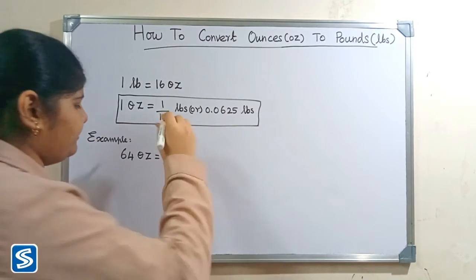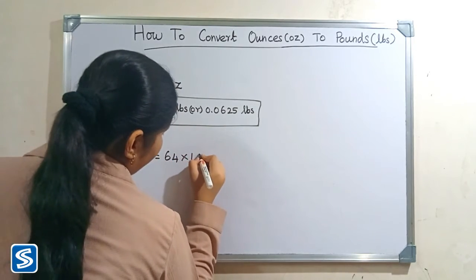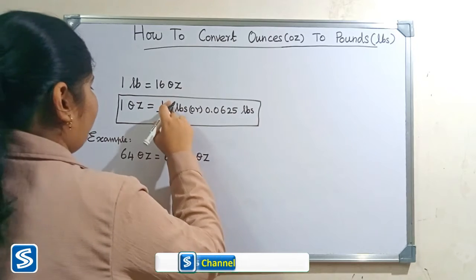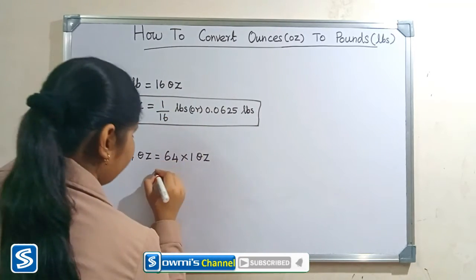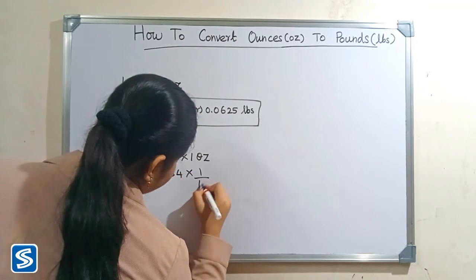64 ounces can be written as 64 × 1 ounce. Now we have to substitute 1/16 pounds in the place of 1 ounce. So, 64 × 1/16 pounds.